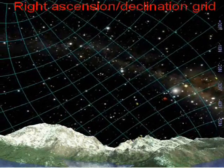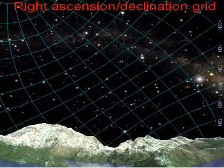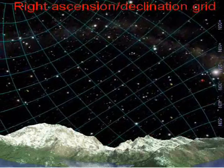For example, if you live at 40 degrees north latitude, objects with a declination below minus 50 degrees (40 minus 90) will never rise.